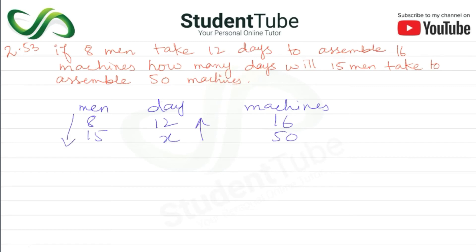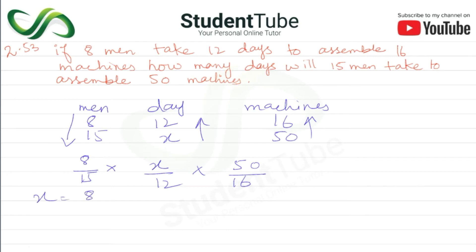So the equation becomes: 8 upon 15 multiplied by X upon 12 multiplied by 50 upon 16. Rearranging, X is equal to 8 upon 15 multiplied by 50 upon 16 multiplied by 12.